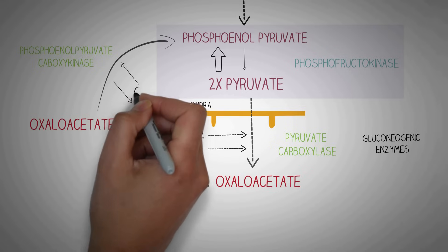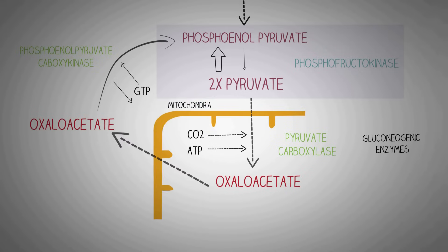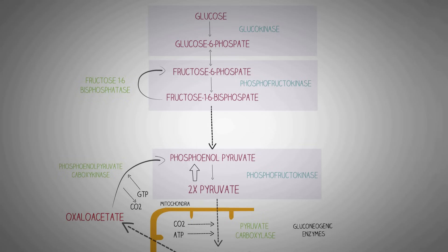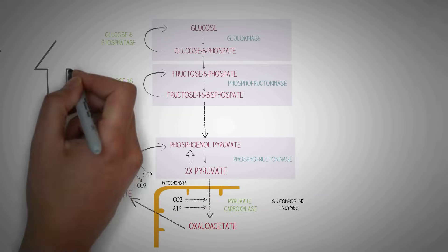In the conversion of oxaloacetate to PEP, GTP acts as the electron donor and carbon dioxide is liberated. Phosphoenol pyruvate is then converted to fructose-1,6-bisphosphate since those reactions are reversible. The next irreversible reaction is the conversion of fructose-1,6-bisphosphate to fructose-6-phosphate, brought about by the enzyme fructose-1,6-bisphosphatase. The last irreversible reaction is the conversion of glucose-6-phosphate back to glucose, brought about by the enzyme glucose-6-phosphatase — phosphatases are enzymes which break the phosphate bond.